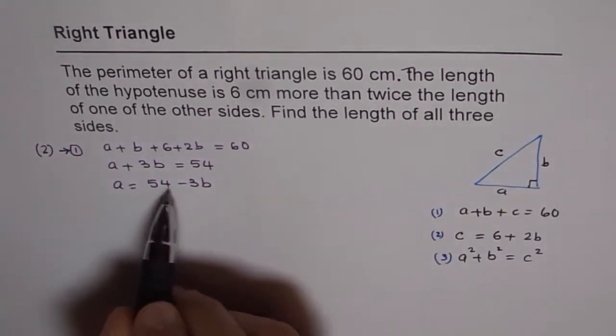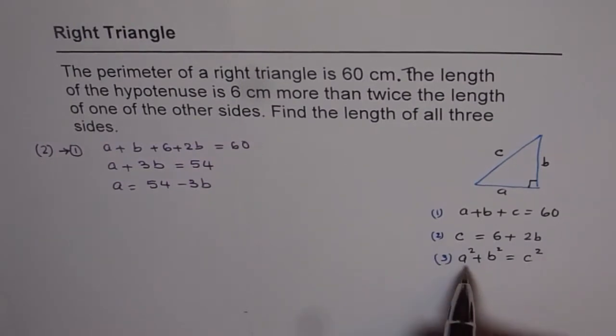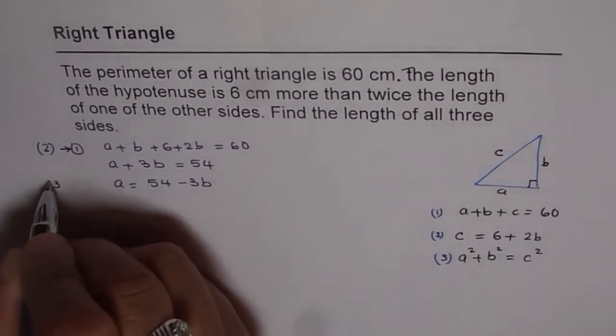Now we know a in terms of b, we know c in terms of b. If I write everything in terms of b, then I will have a quadratic equation in one variable. It will be easier to solve. So this is equation 4. We will substitute 4 in 3.